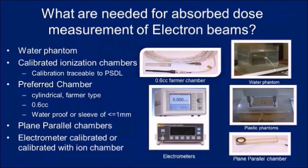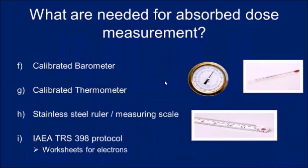So you should have a plastic phantom, water phantom, plane parallel chamber, cylindrical chamber, and electrometers. In addition you need a barometer and thermometer — both should be calibrated to measure pressure and temperature — and a ruler to measure depth, preferably a stainless steel ruler, along with the IAEA TRS-398 protocol and its worksheets.